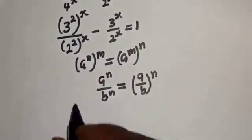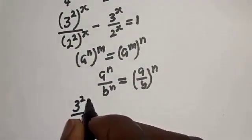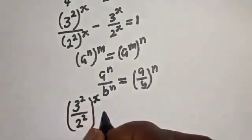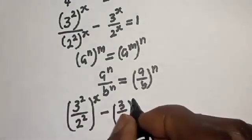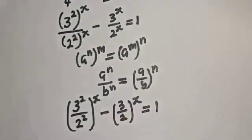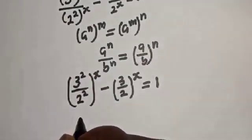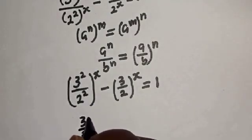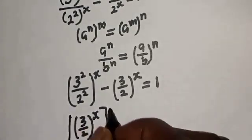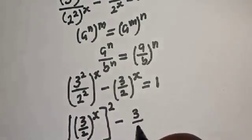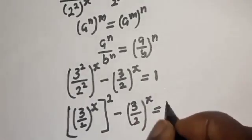From here, we have (3 squared over 2 squared) all raised to the power s, minus (3 over 2) all raised to the power s, equals 1. Applying the exponent rule, this becomes (3 over 2) all raised to the power s, all squared, minus (3 over 2) all raised to the power s, equals 1.